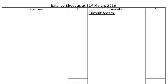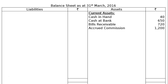Under assets, current assets include: cash in hand Rs. 40, cash at bank Rs. 650, bills receivable Rs. 720, and accrued commission (commission receivable) Rs. 1,200. Commission receivable is already given in the trial balance — if an outstanding expense is given in the trial balance, it will be shown under current liabilities in the balance sheet, and nowhere else, because it is already adjusted. Here accrued commission Rs. 1,200 is already adjusted, so it is shown only here.